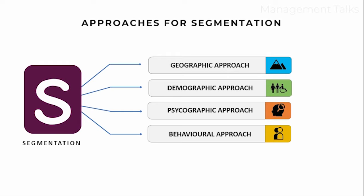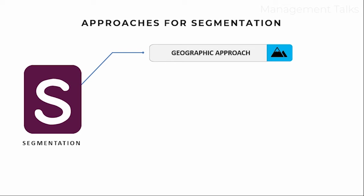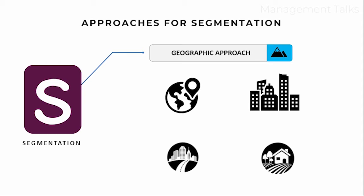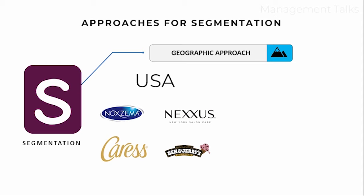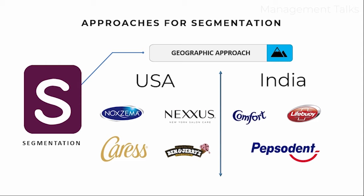Let's see geographical segmentation — dividing consumers on the basis of their location. It may be a country-wise, state-wise, or city-wise division. Taking the example of FMCG company Unilever: Unilever has divided its market country-wise. They have brands like Nexus, Noxzema, Ben & Jerry's, and Caress in the USA but they are not in India. India has different brands like Lifebuoy, Comfort, Pepsodent, and many more. So here the company adopted geographical segmentation.